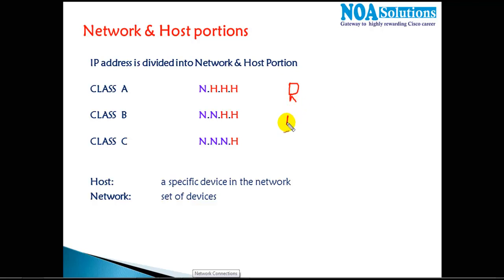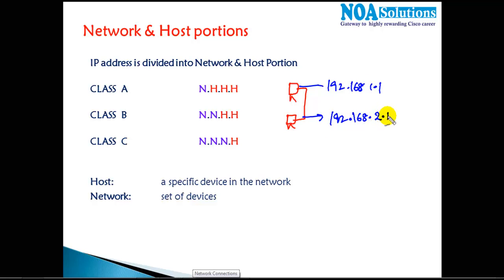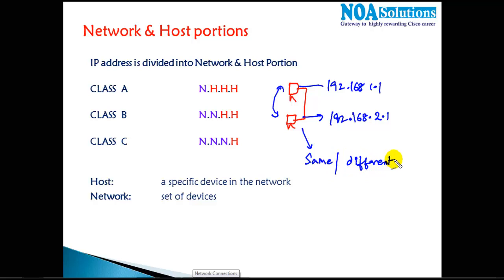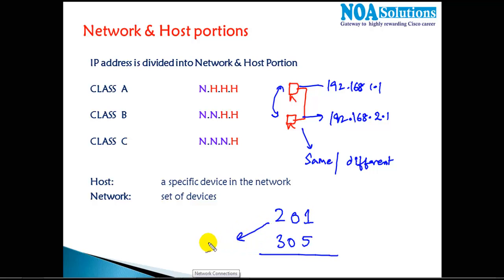Take an example: two computers in a LAN connected to each other. The IP address of the first device is 192.168.1.1 and the second device is 192.168.2.1. The requirement is that these two devices should communicate and ping each other. The first condition is they should be on the same network. Just like asking whether room 201 and 305 are on the same floor — the answer is no, because the floor part is different.